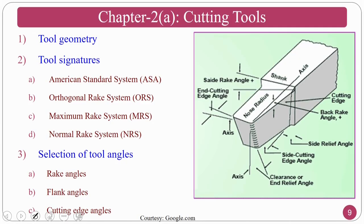In Chapter 2 we deal with tool geometry and tool signatures. In tool signatures we cover the American Standard System (AAC system), ORS system, MRS system, and NRS system. We also cover the selection of tool angles — how to select the rake angle, what is the importance of more or less rake angle, flank angles, and cutting edge angles for particular operations. You can see in the picture what are the angles, surfaces, and cutting edges.